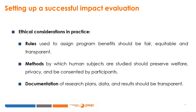In practice, there are three main ethical considerations. First, the rules used to assign program benefits should be fair, equitable and transparent. Random assignment fulfills these requirements in contexts where limited financial resources make it impossible to reach all beneficiaries. Second, the methods by which human subjects are studied should preserve welfare and privacy, and be consented to by participants. Third, the documentation of research plans, data and results should be transparent.